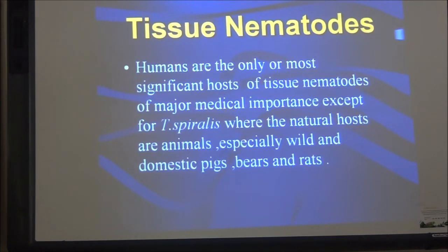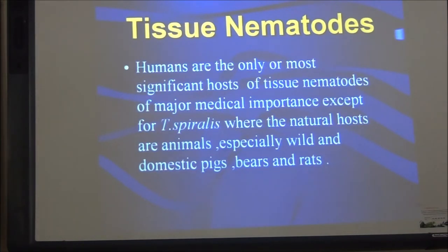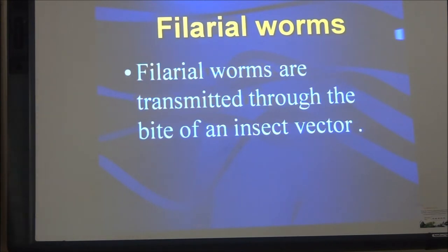Humans are the only or most significant hosts of tissue nematodes of major medical importance, except for Trichinella species where the natural hosts are animals like domestic pigs, bears, and rats. One characteristic of filarial worms is that they are transmitted through the bite of an insect vector — they are vector-borne.